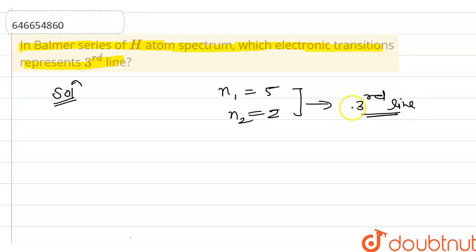Okay, so we have to take in Balmer series n2 equal to 2 and n1 equal to 5, then 5 to 2 transition will be delivered by the third line of spectrum. Okay,